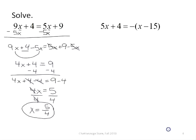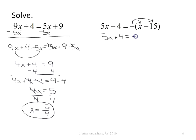Now let's look at the second equation: 5x plus 4 equals negative, then in parentheses, x minus 15. This problem does have parentheses, so our first step will be to distribute to get rid of the parentheses. The first side stays 5x plus 4. On the second side, this is like multiplying by negative 1, so I get negative x plus 15. It changes the sign of both terms.